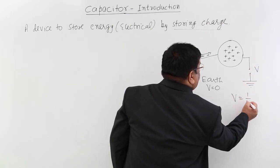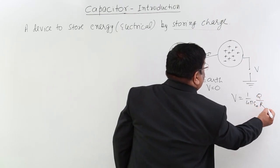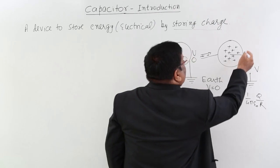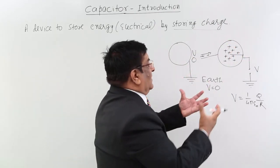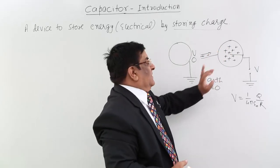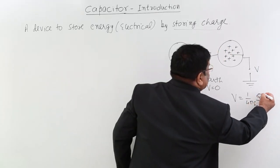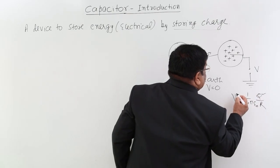How much is that potential? That potential, we know the formula: 1 upon 4πε₀, Q upon R. This is the potential of a sphere, of a ball, of any material. Now if this charge is increasing, what will increase? Potential.